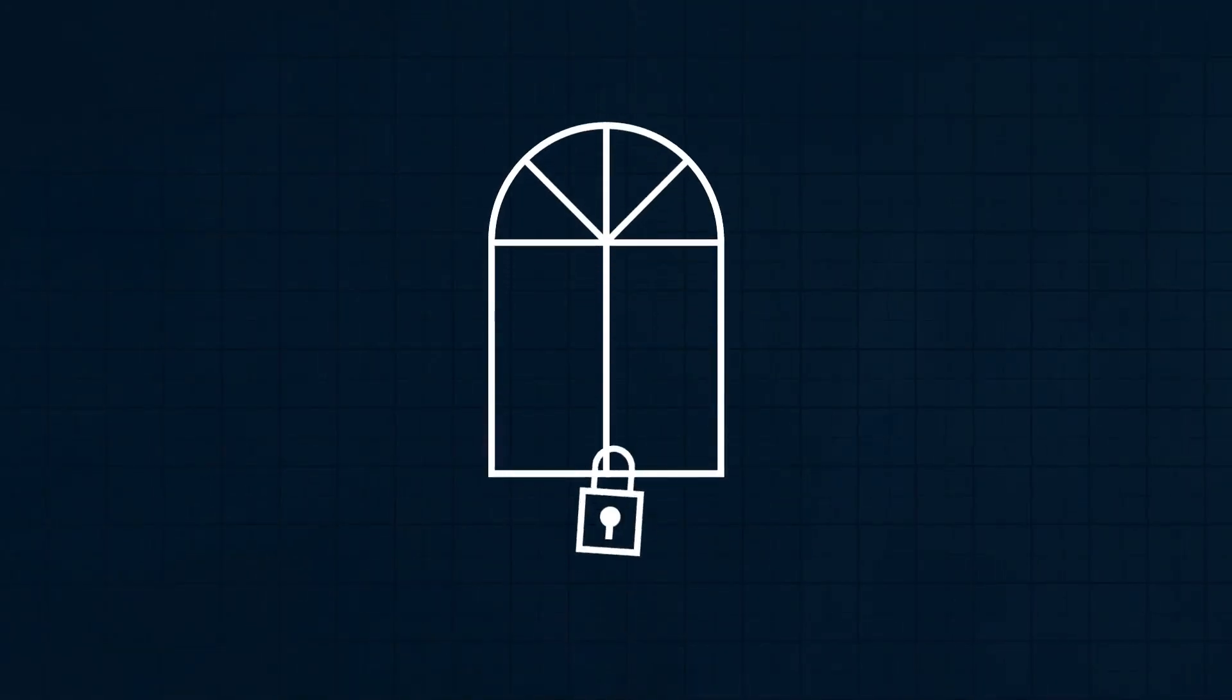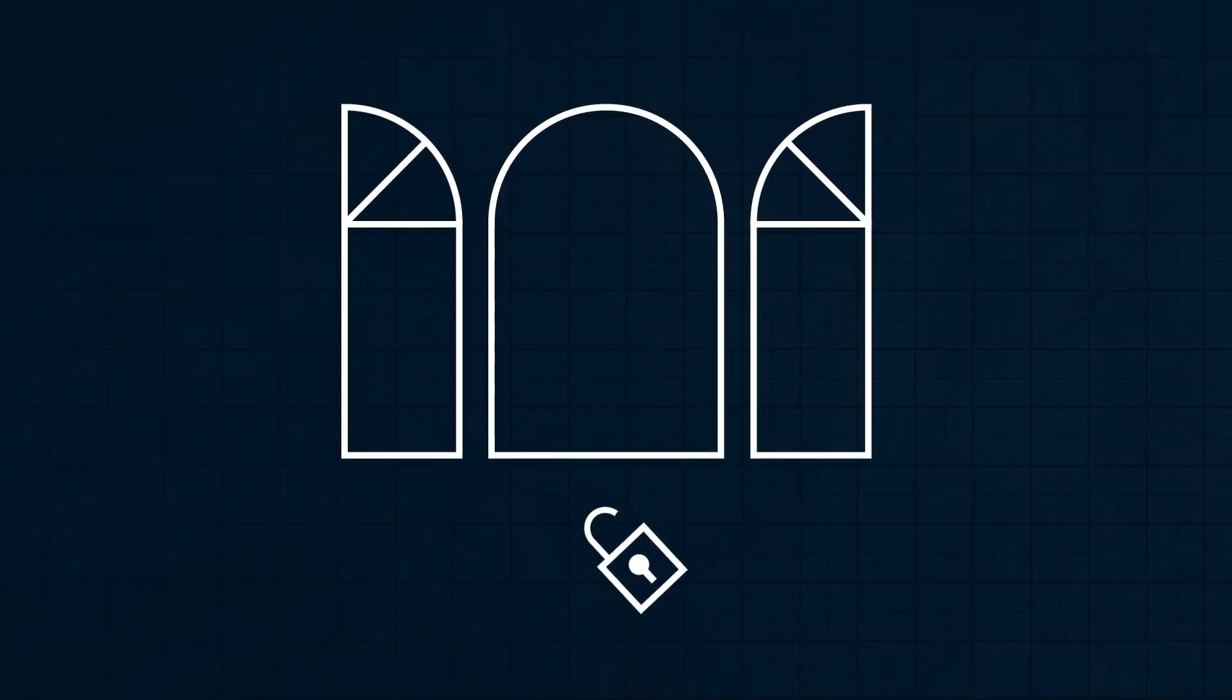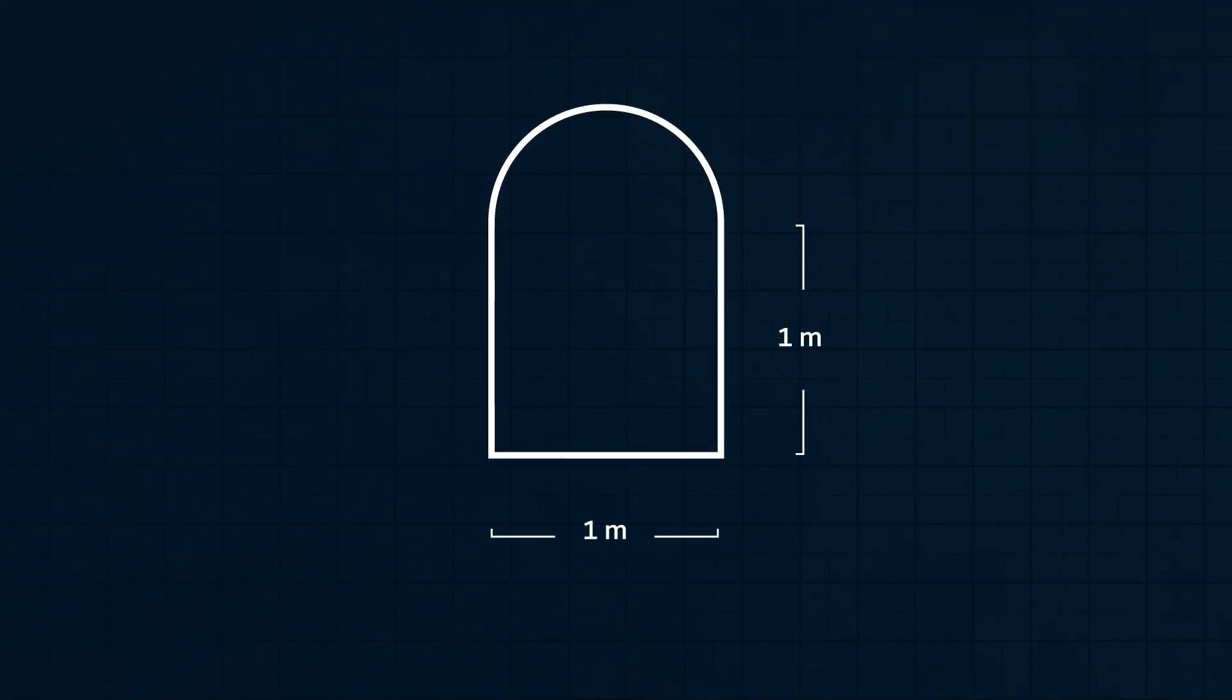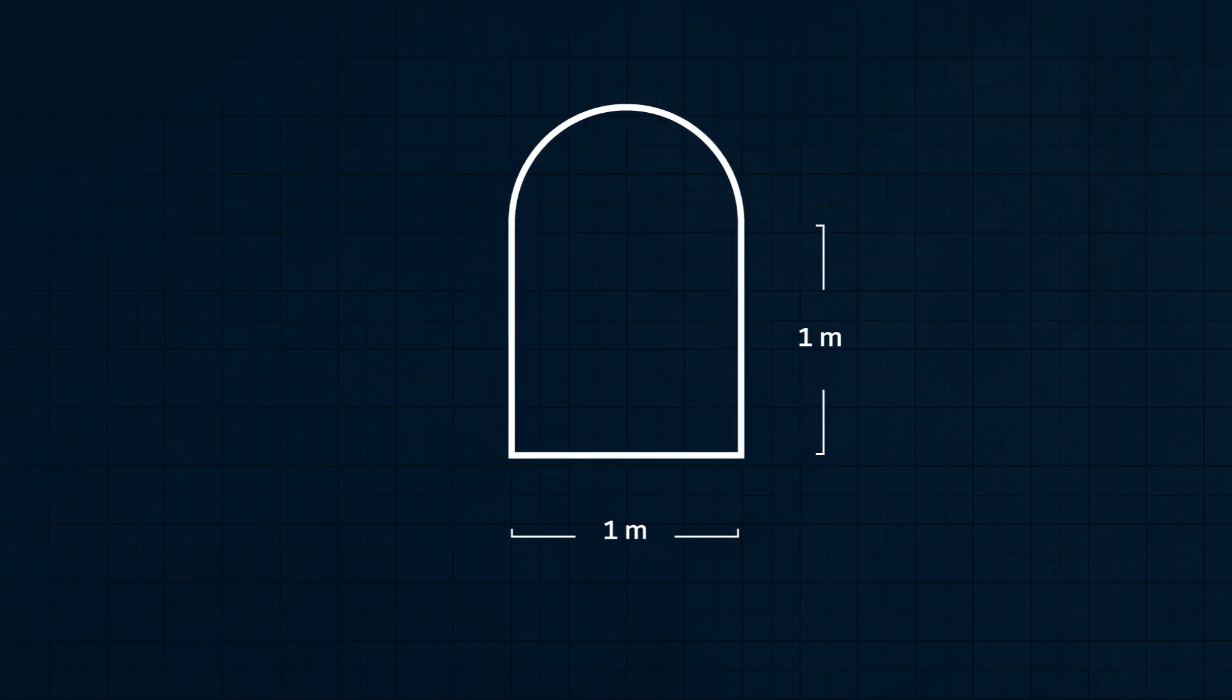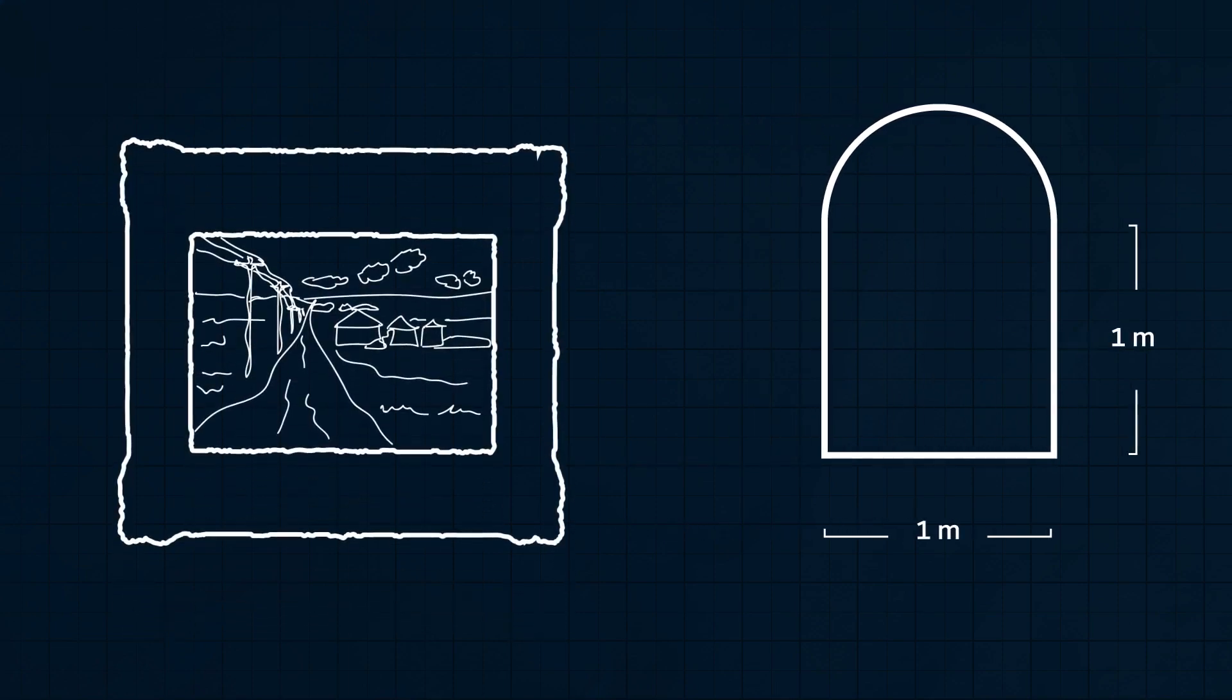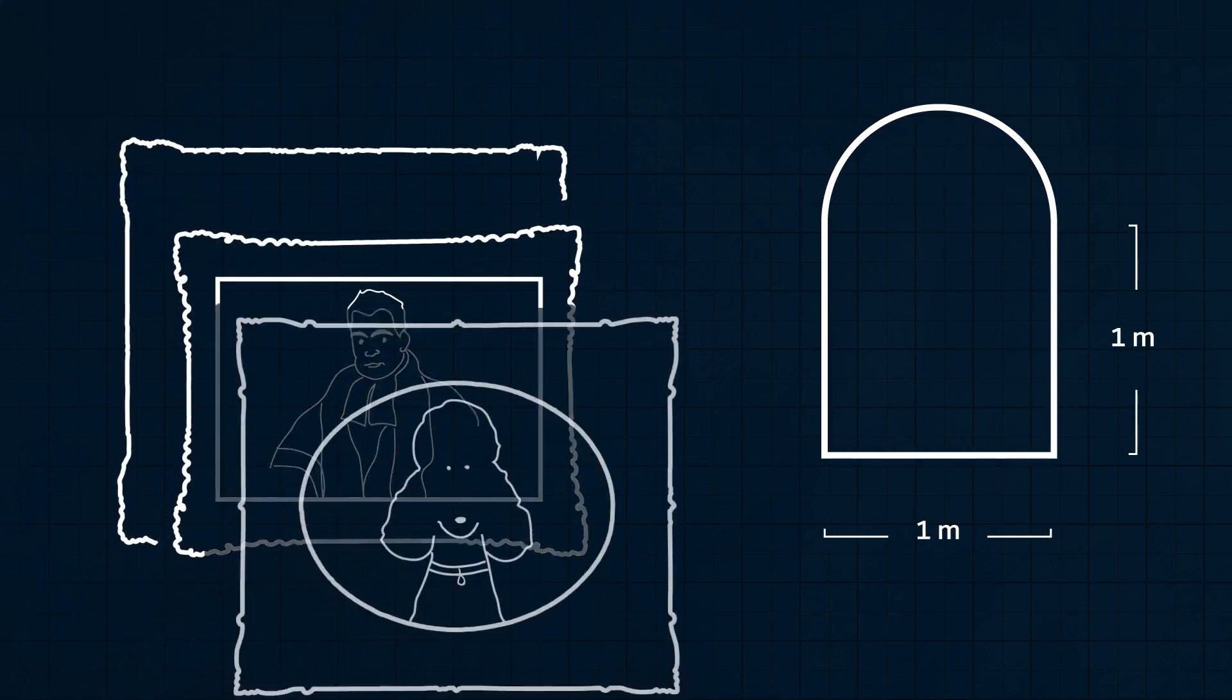The curator of an art museum discovered that a lock on a spring-lined window in one of the display rooms is broken. The shape of the window is a square of side length 1 meter with a semicircle on top whose diameter is the top of the square.